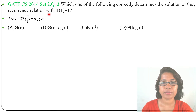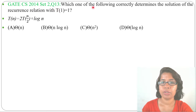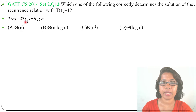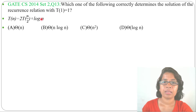Let's solve a previous question on algorithm analysis. This question was asked in GATE CS 2014 Set 2, Question 13: which one of the following correctly determines the solution of the recurrence relation with T(1) = 1 and T(n) = 2T(n/2) + log n? Four options are given.